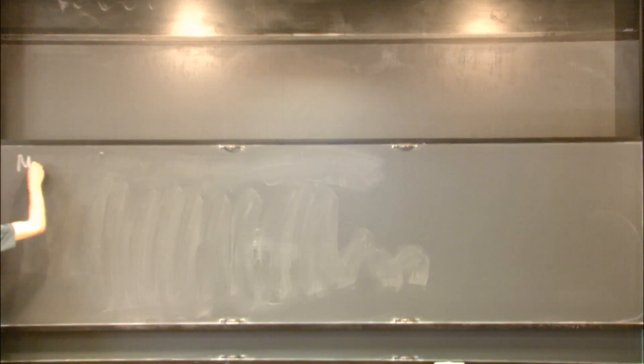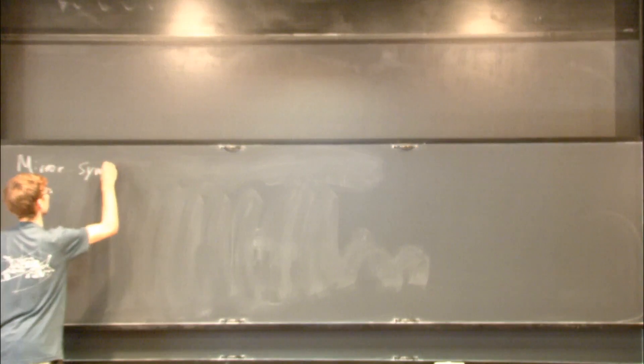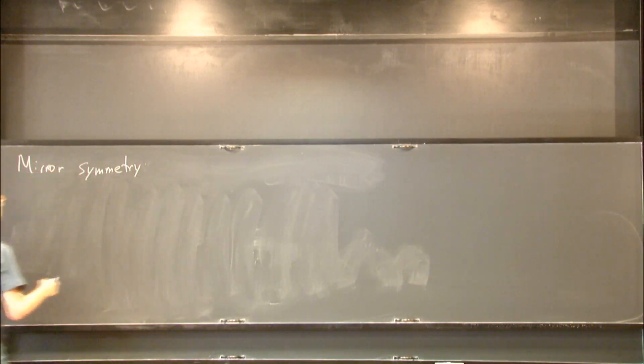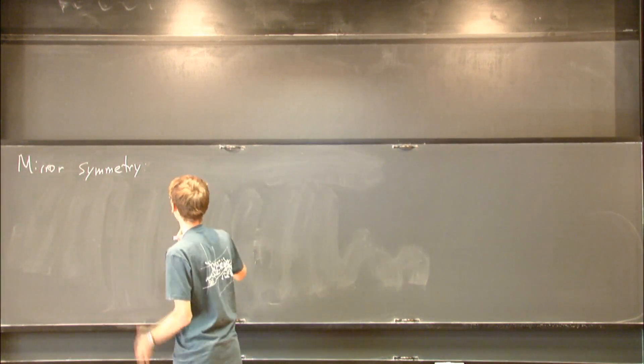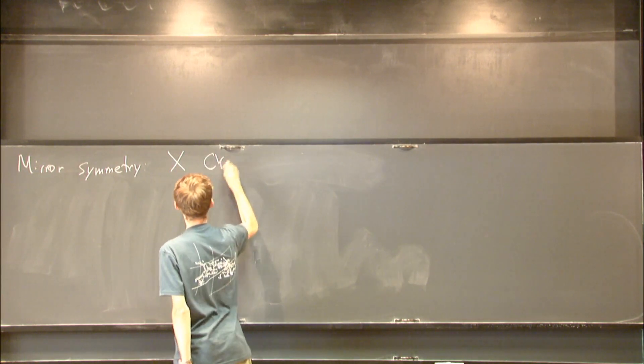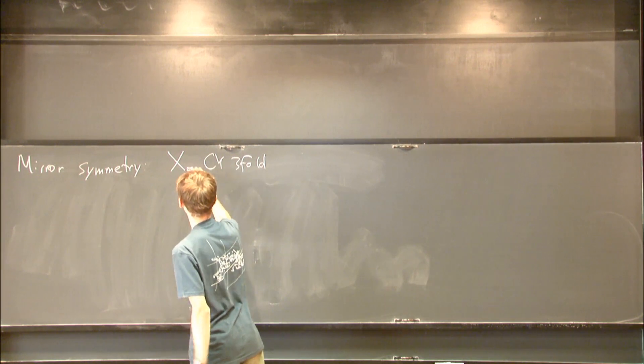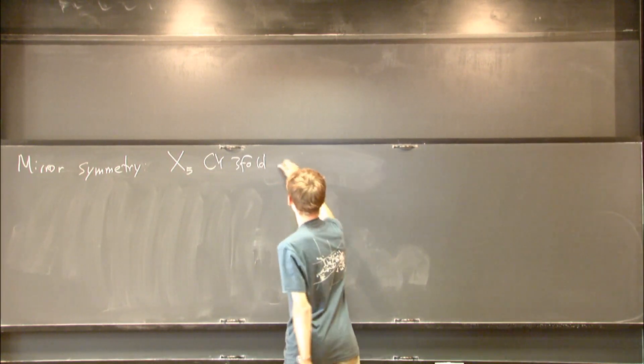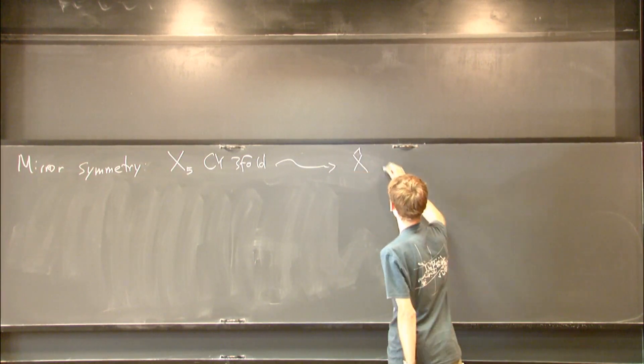So there's a principle - it's not a complete mathematical formulation, but string theory predicts that for every Calabi-Yau threefold, and maybe let's specialize for the quintic, there should exist what's called a mirror Calabi-Yau threefold.